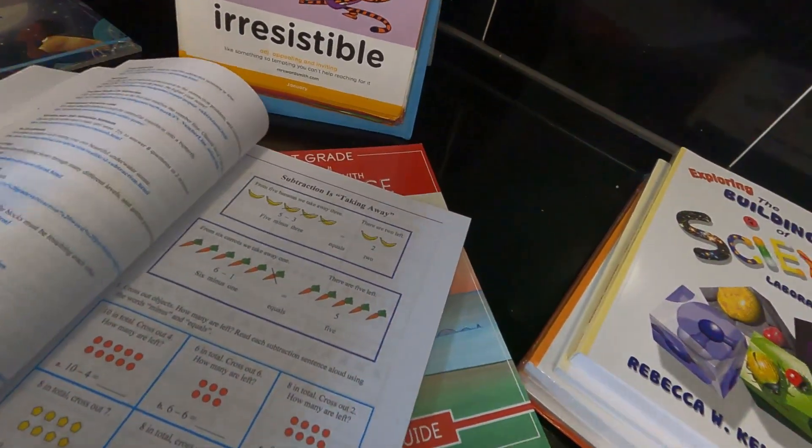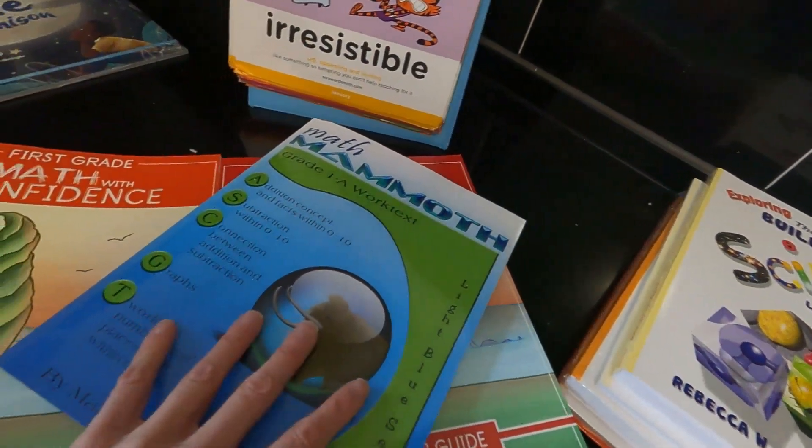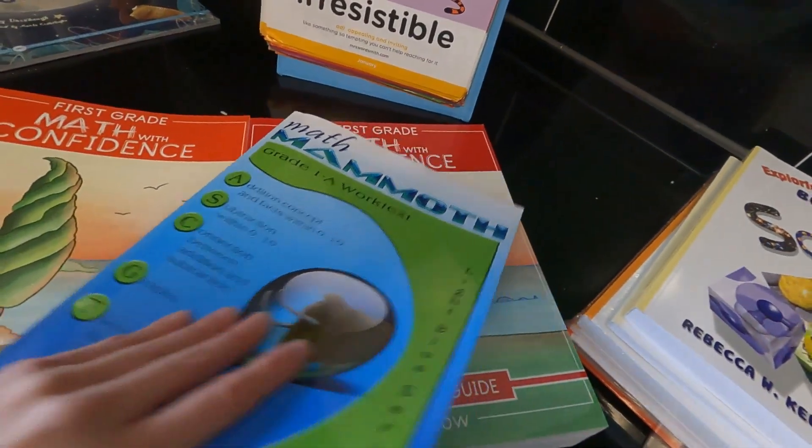So let's look at Math Mammoth first. This is the first year of it. These two curriculums are priced the same. This is mastery, I got one mastery, one spiral, and this is both mastery and spiral.